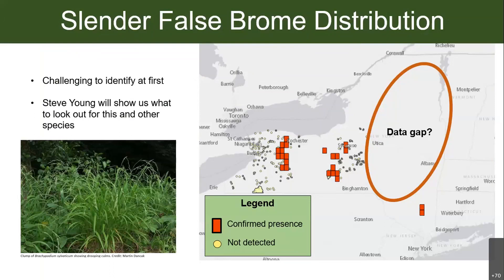Some of these species can be challenging to identify at first. If you were walking down a trail and saw a clump of grass on the side, you might not even think anything about it — it just looks like an innocent plant. Fortunately we have Steve Young, who will show us the different identifying features of some of these plants so you can notice and identify them in the field.